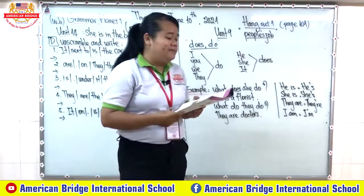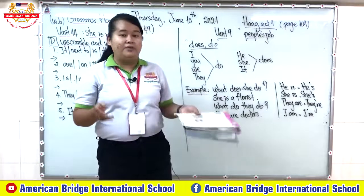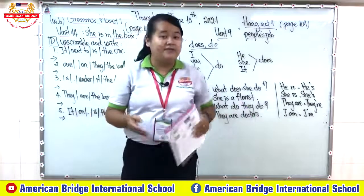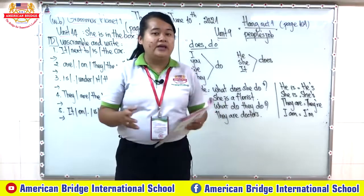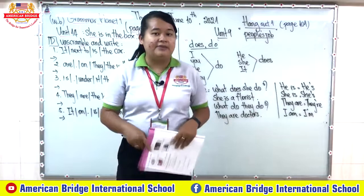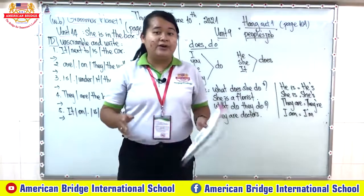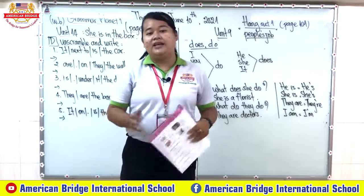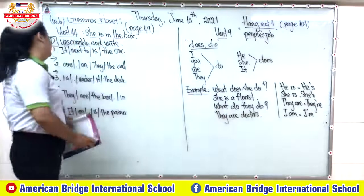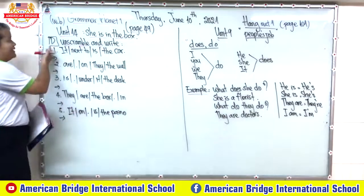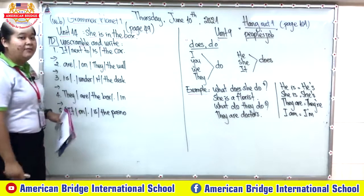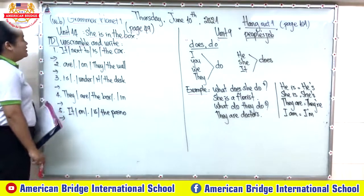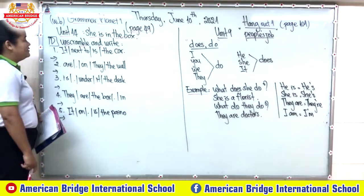Now let's look at the first exercise where you need to unscramble and write. This exercise wants you to arrange sentences related to prepositions of place into the correct sentence. Let's look at our whiteboard together — it is the same as what you can see in your book.